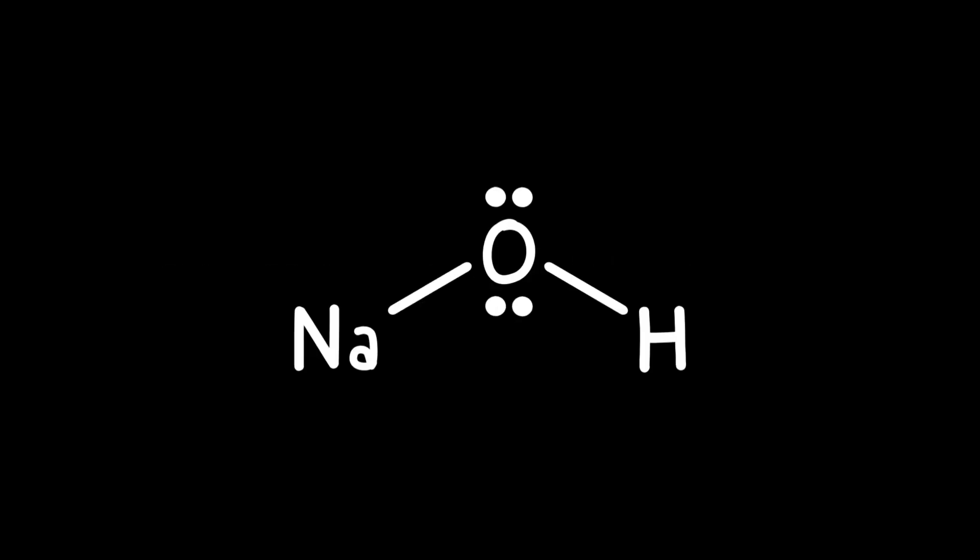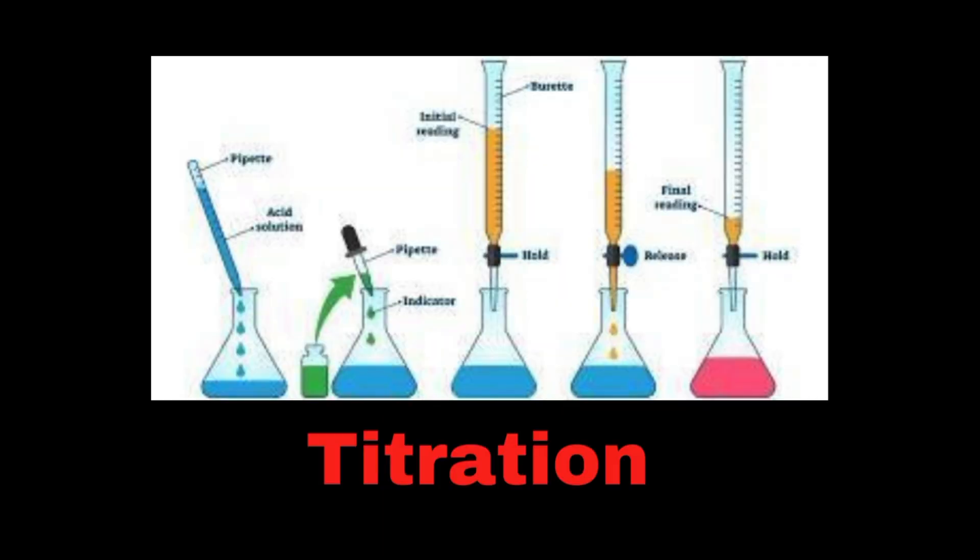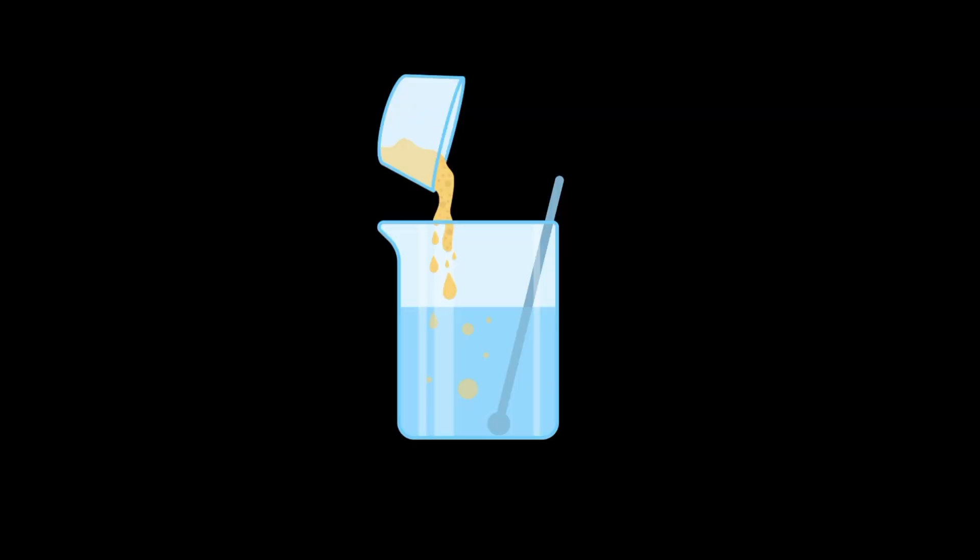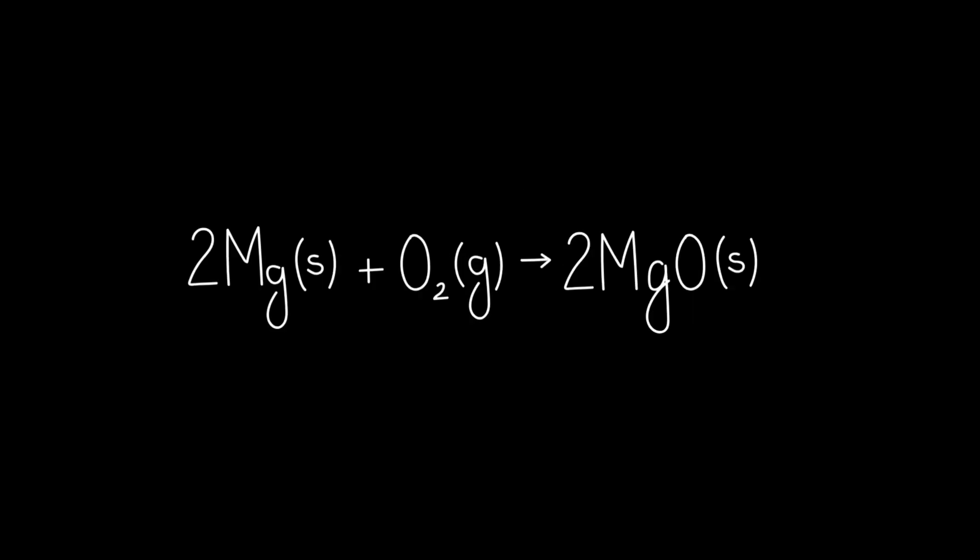For example, in a neutralization reaction, you can calculate how much acid reacts with a given amount of base. Solution stoichiometry is also important in processes like titrations. In a titration, one solution is slowly added to another until the reaction reaches its endpoint. By using stoichiometric calculations, you can accurately determine the concentration of an unknown solution. Understanding solution stoichiometry helps chemists carry out and analyze reactions in a liquid medium with precision, making it a crucial skill in many fields of chemistry.